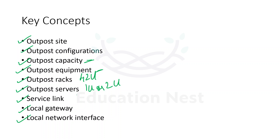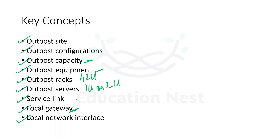The service link is the network route that enables communication between your Outpost and its associated region, since Outpost is an extension of an AWS region. Each Outpost is an extension of an availability zone and its associated region. The local gateway is a logical interconnect virtual router that enables communication between the Outpost rack and your on-premises network. The local network interface is a network interface that enables communication from an Outpost server to your on-premises network.